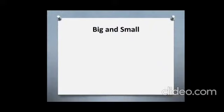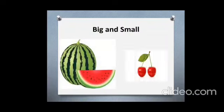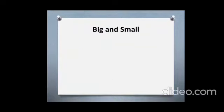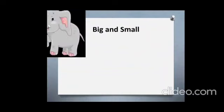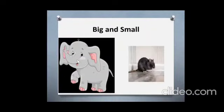We have two objects here — a watermelon and a cherry. Can you find which one is big and which one is small? A watermelon is big and a cherry is small. Shall we see one more example, children? An elephant and a rat. An elephant is big and a rat is small.